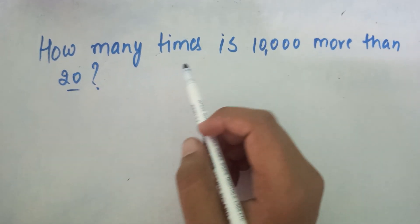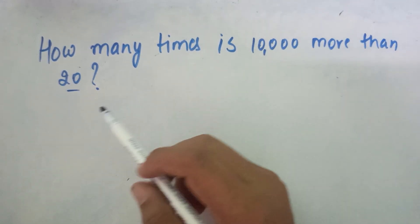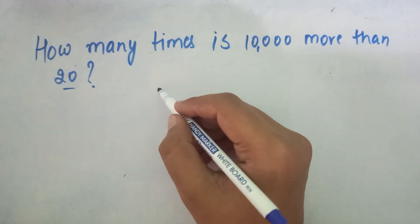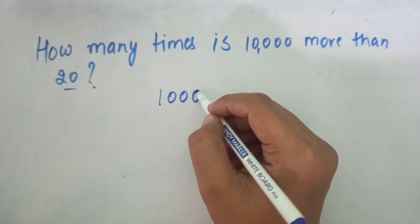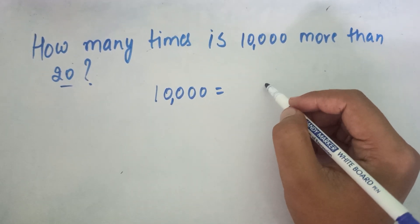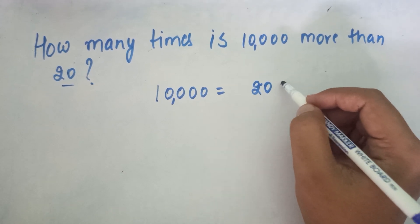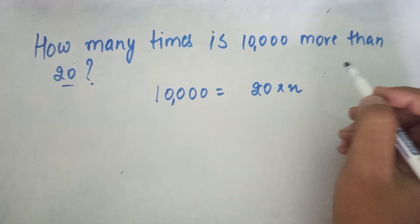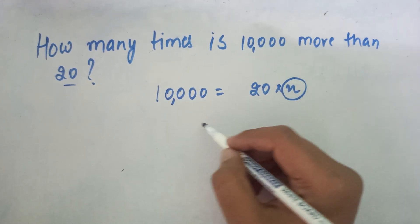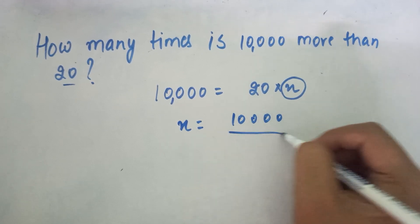So friends, today's question is: how many times is 10,000 more than 20? You can easily find out. So 10,000 is more than 20 x times. Let's suppose. So we just need to find x here. So x is basically 10,000 upon 20.